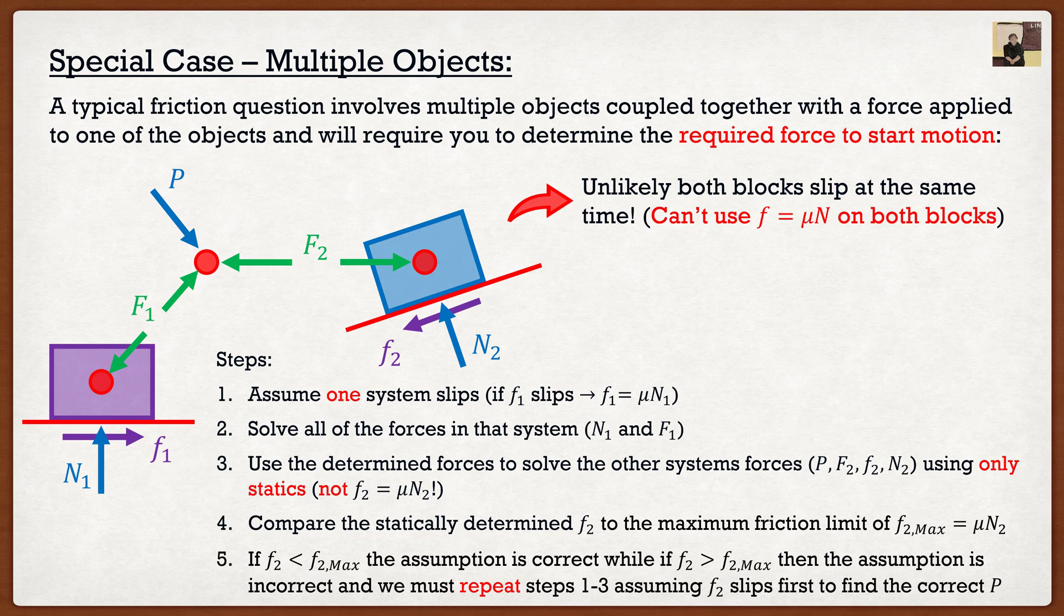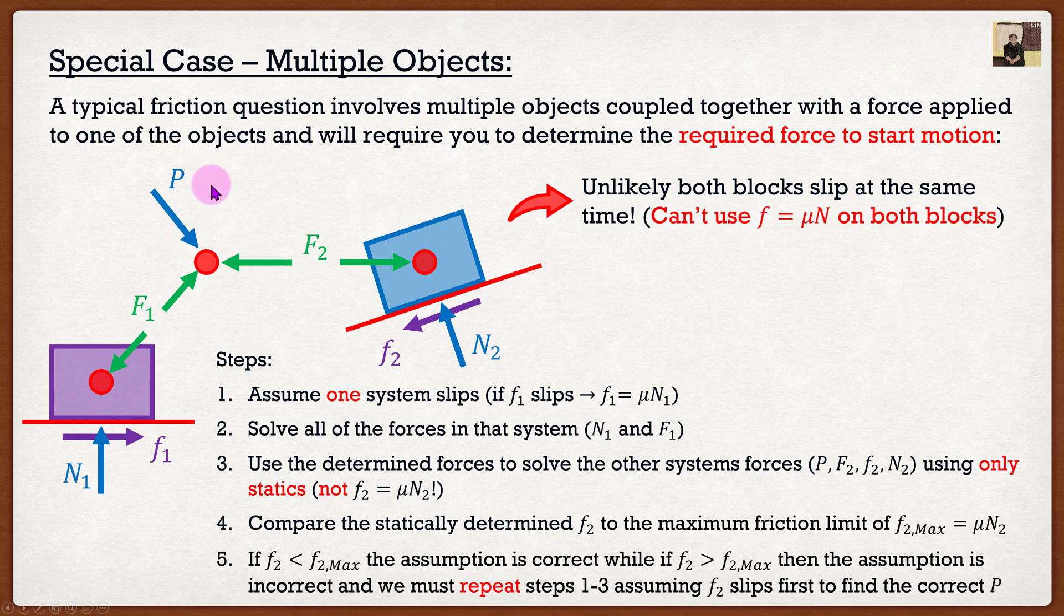So this is where it gets gross. If you make a wrong assumption of what slips first, you're going to have to start recalculating things. Now, I know a lot of you guys are saying, well Clayton, this is dumb. What I could have done is I could have analyzed this system and then found P. And then separately I could have analyzed this system and then found P, and then just figure out which P is lower. And that is correct.